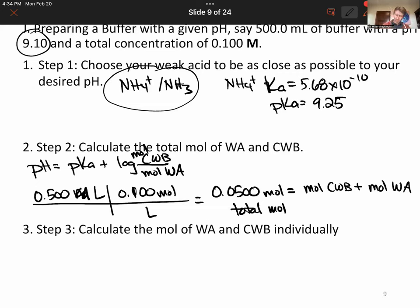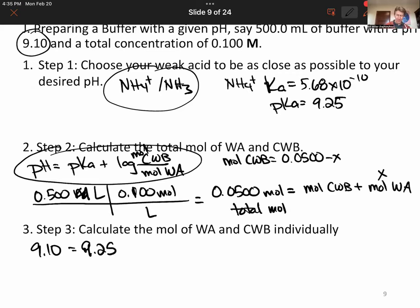So if we now call x our moles of weak base, then moles of conjugate weak base will be 0.0500 minus x. And we can now plug this into our Henderson-Hasselbalch equation. We know that we've got 9.10 for a desired pH. We know that we have 9.25 for a pKa. For our conjugate weak base moles, we've got 0.0500 minus x. And our weak acid moles are just going to be x.